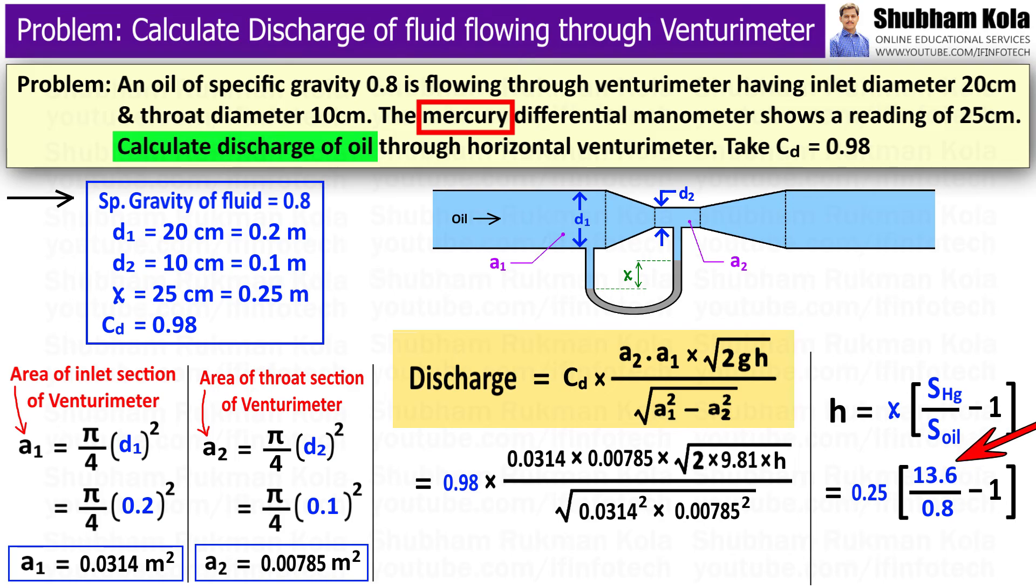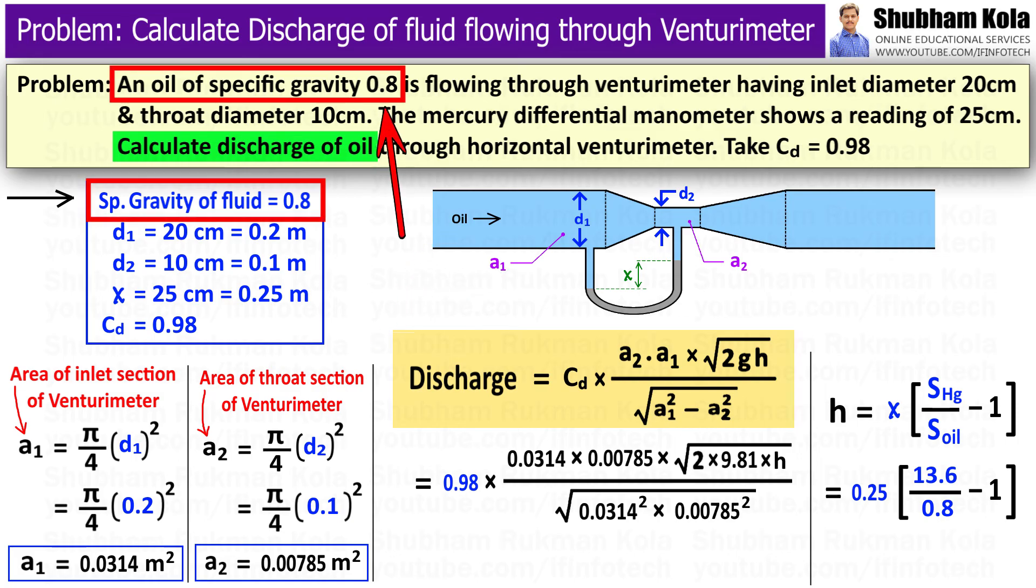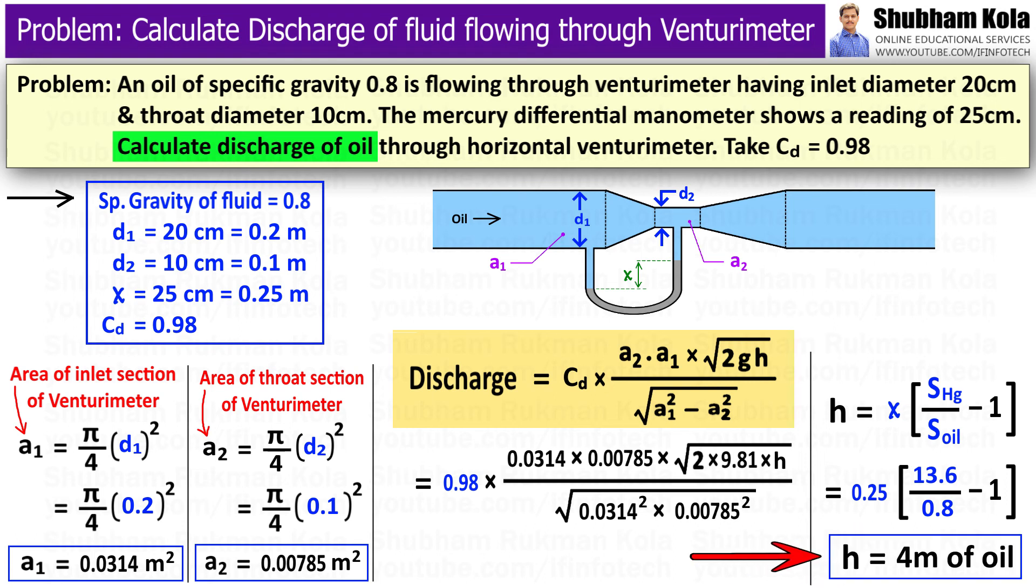Mercury's specific gravity is 13.6, and the specific gravity of the lighter fluid, oil, is 0.8 as given in the problem. By calculating this, we get small h equal to 4 meter of oil.